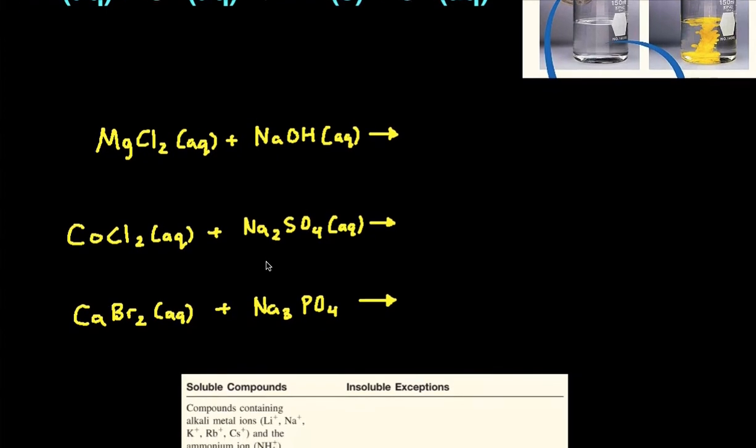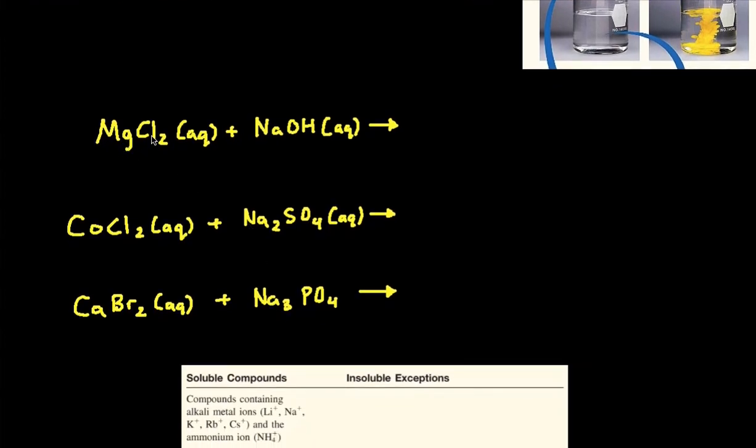Alright, so looking at these problems, the first one we have magnesium chloride reacting with sodium hydroxide. A precipitation reaction is pretty much just a double replacement. So we're going to approach this the same way as we would with a double replacement reaction.